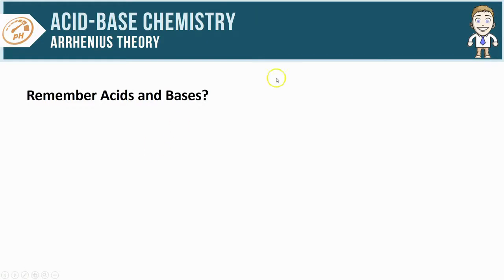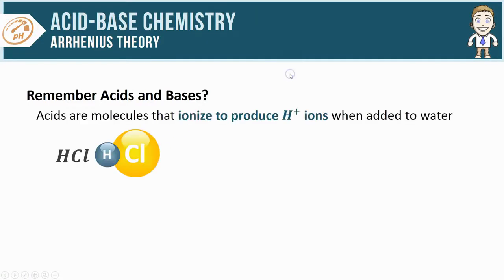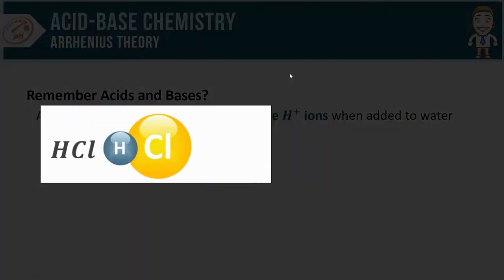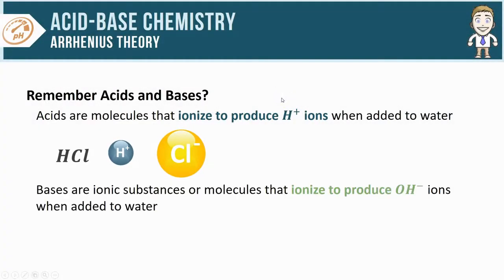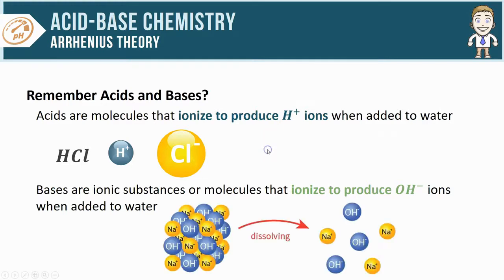First, remember from the last video we saw that acids are substances that ionize to produce H plus ions like the hydrogen chloride molecule shown here, and bases are ionic substances or molecules that produce hydroxide ions when added to water like the sodium hydroxide shown here.